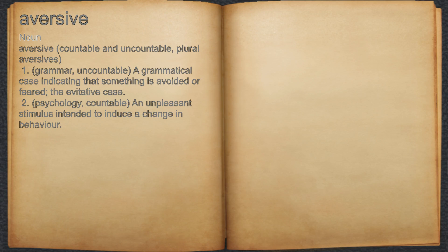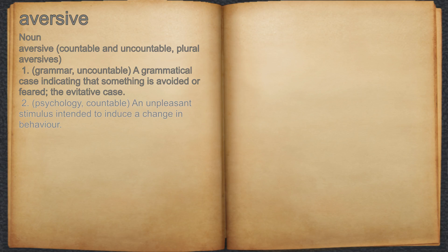Aversive. Noun. 1. Grammar. Uncountable. A grammatical case indicating that something is avoided or feared. The evitative case. 2. Psychology. Countable. An unpleasant stimulus intended to induce a change in behavior.